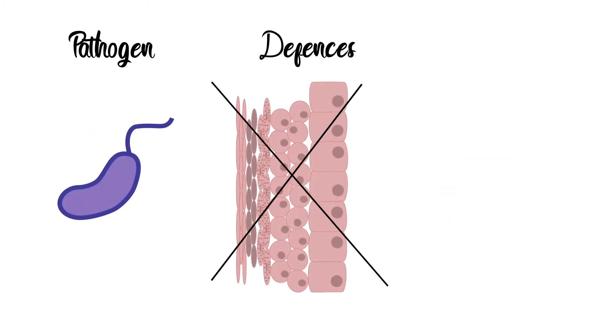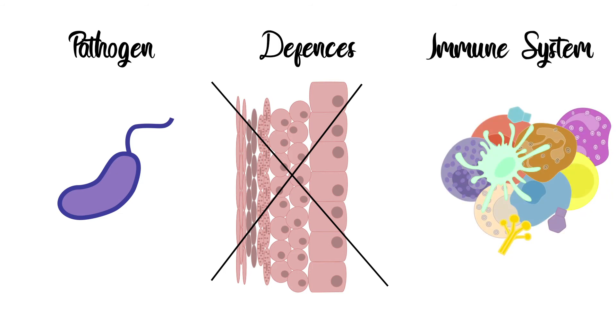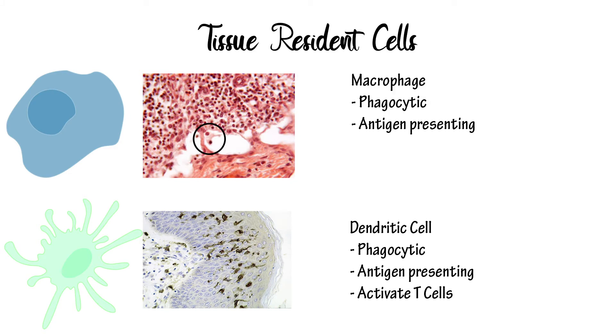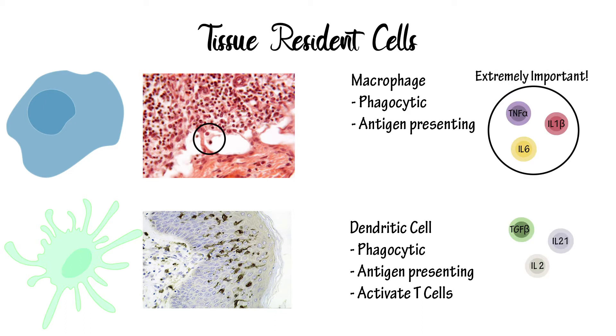If pathogens breach these defences, they can come into contact with immune cells and proteins. Tissue resident immune cells first come into contact with these pathogens, the main ones being macrophages and dendritic cells. Using pattern recognition receptors, these cells recognise and process pathogens, releasing molecules called cytokines that induce a further immune response.